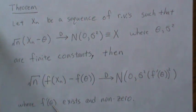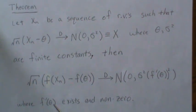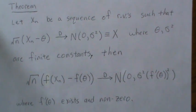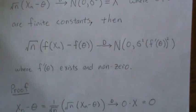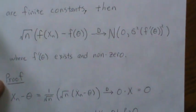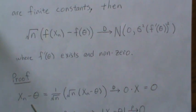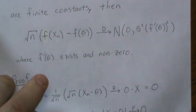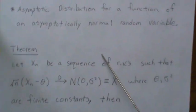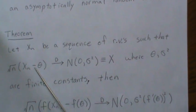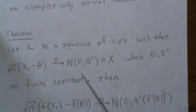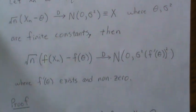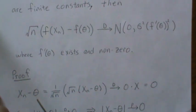That assumes the first derivative exists and is non-zero. Note that if the derivative exists at theta then it's also continuous at theta, which plays a part in our proof. So let's look at X_n minus theta — that's this piece here — which by assumption we know converges in distribution.